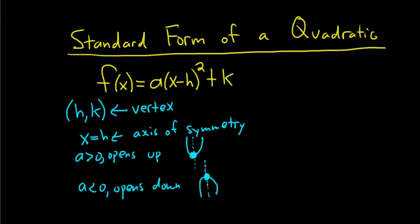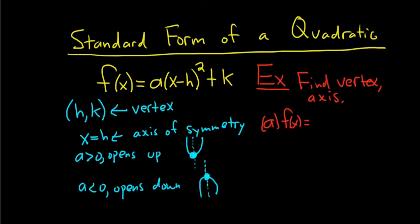Let's do a couple examples where we find the vertex and axis. So find the vertex and axis. Part a: f(x) equals negative 2 times (x minus 3) squared, plus 11. And we have to find the vertex and the axis.